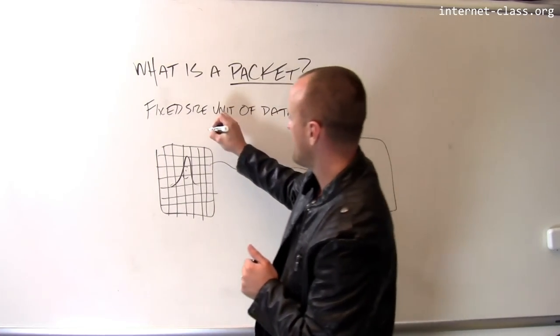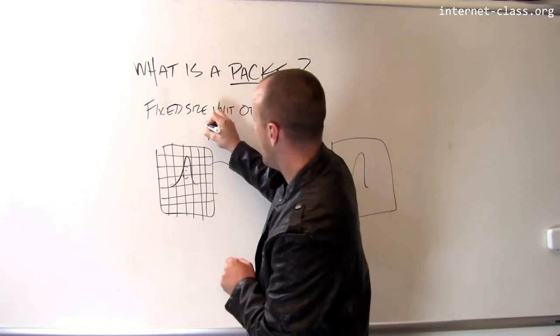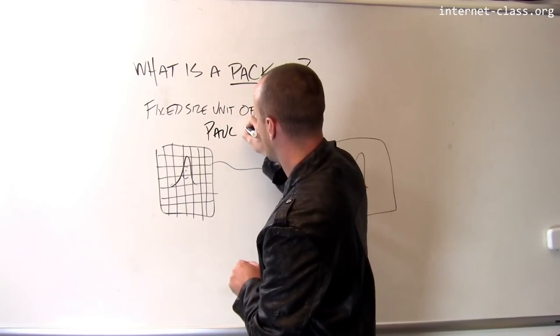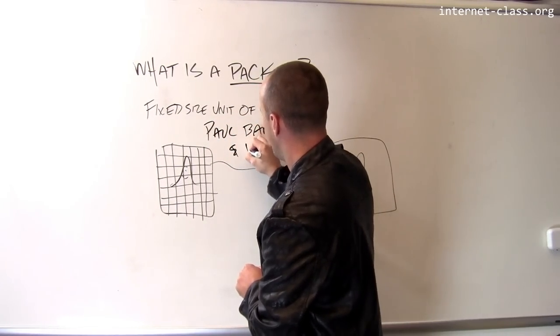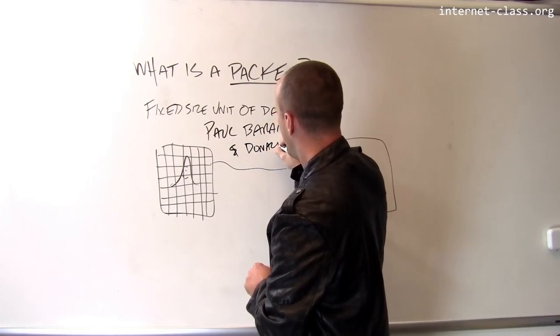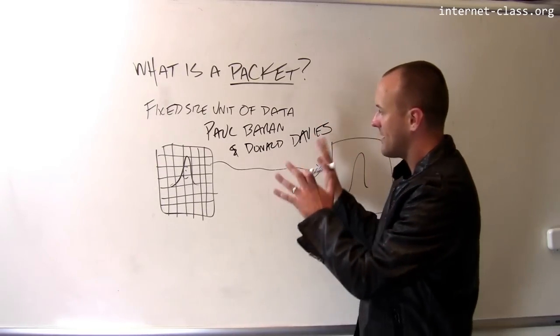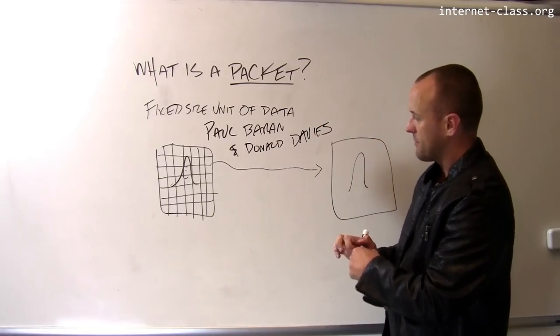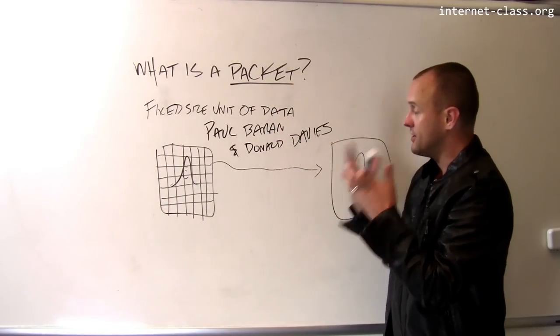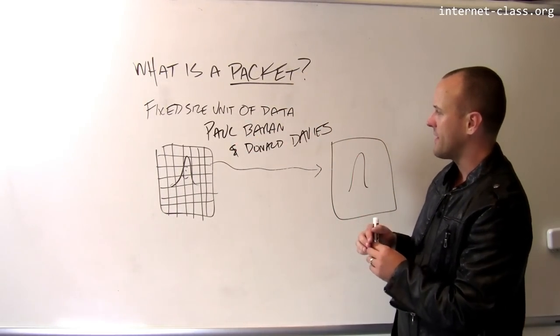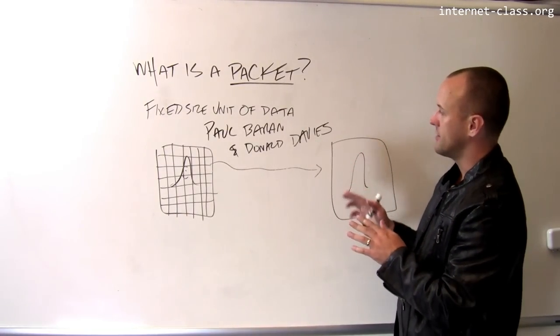And this is sort of one of the key ideas that gave birth to the Internet. The two people that deserve credit here are Paul Barron and Donald Davies. Two researchers independently came up with this idea a few years apart. Donald Davies gets credit for the term packet, which is obviously incredibly intuitive. Paul Barron called these message blocks, I think, which doesn't quite have the same ring to it.